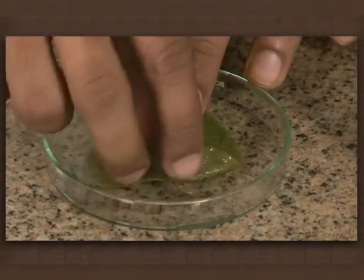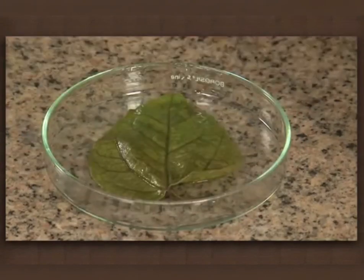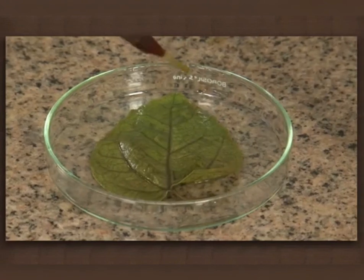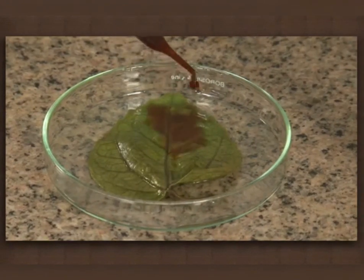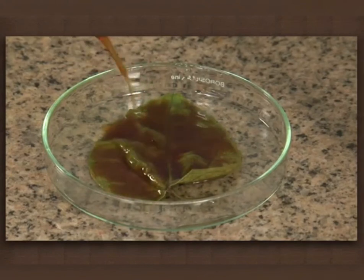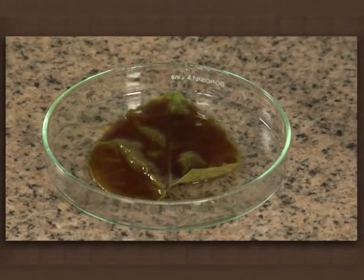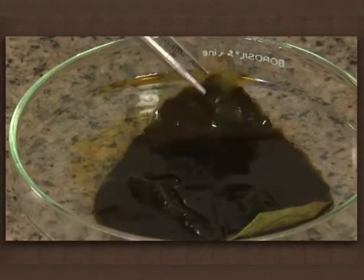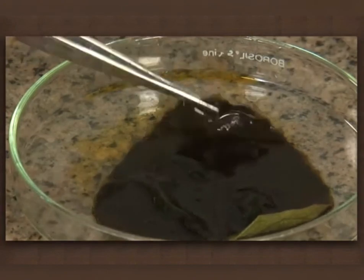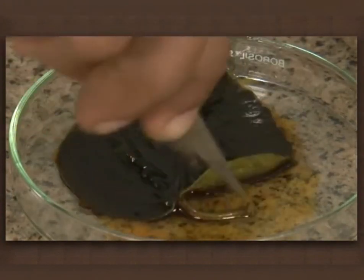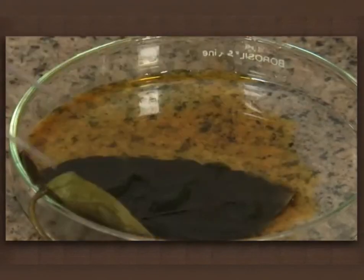Place the bleached leaf in a petri dish and pour iodine solution over it. Note the color of the leaf — it changes to dark green. This is because iodine combines with starch present in the leaf and forms a violet-colored complex. This shows that starch is present in leaves.